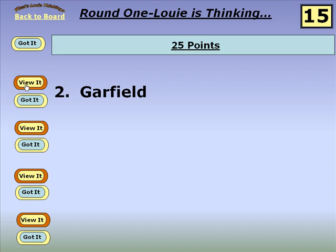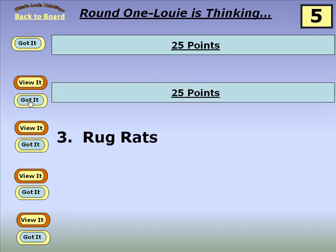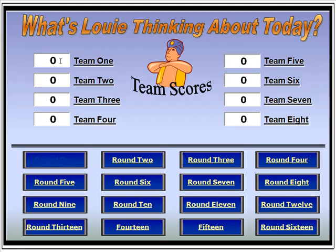Then you click the next button to view it. What I normally do is get ready and put my mouse over 'View' so that when they say it I can click to show the next word, then click 'Go Back' and click 'Got It.' You'll notice there's a timer ticking down, and when it runs out, that team has gotten exactly 50 points. Then I click 'Back to Board' in the upper left.